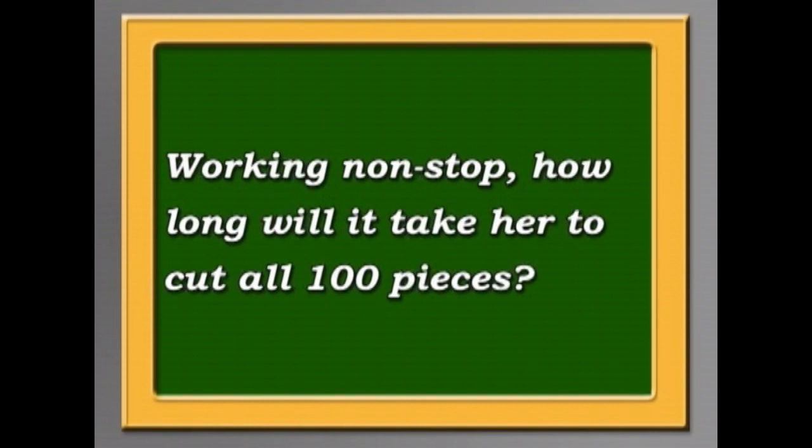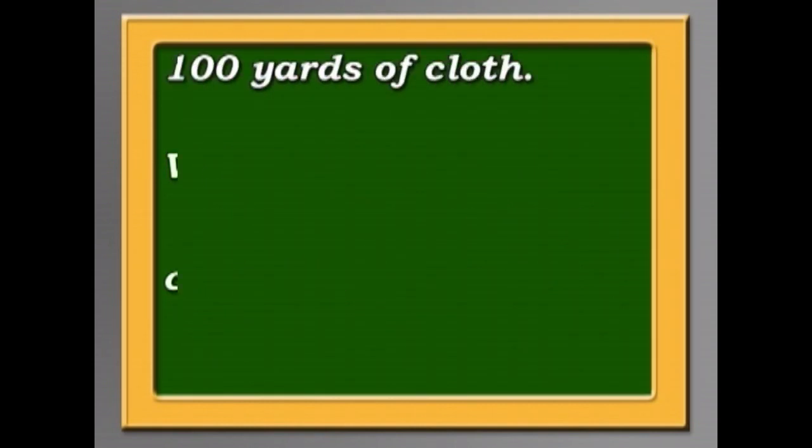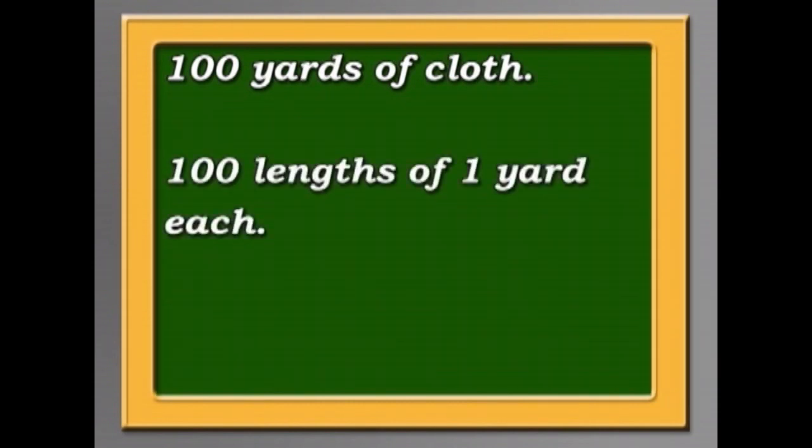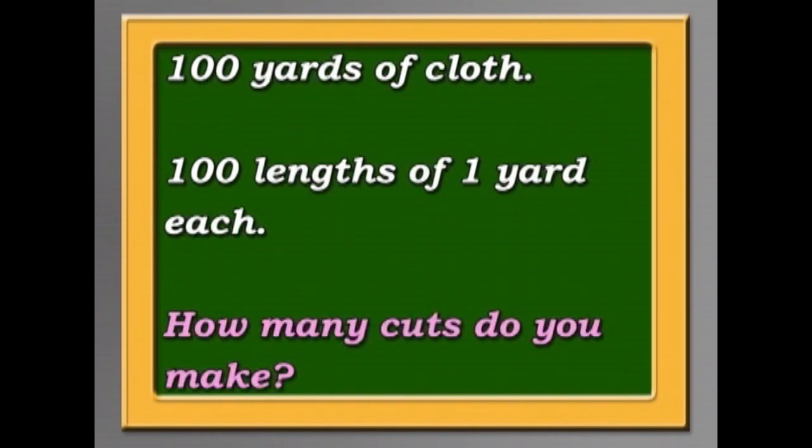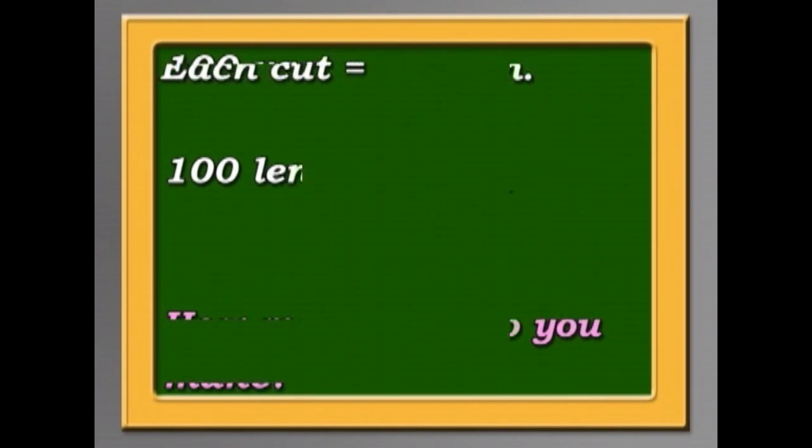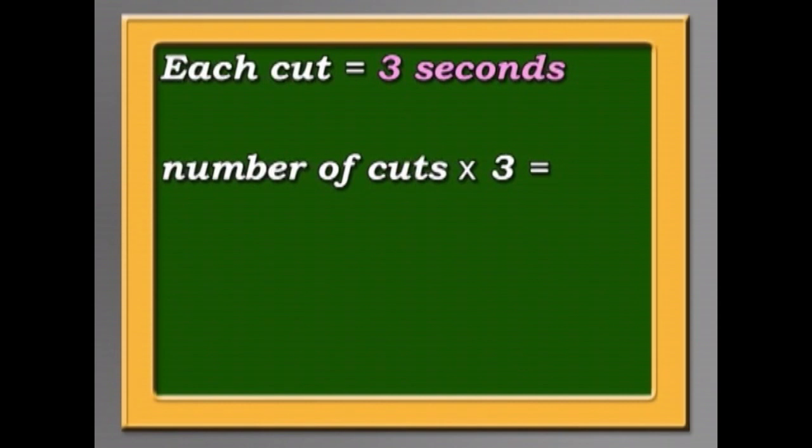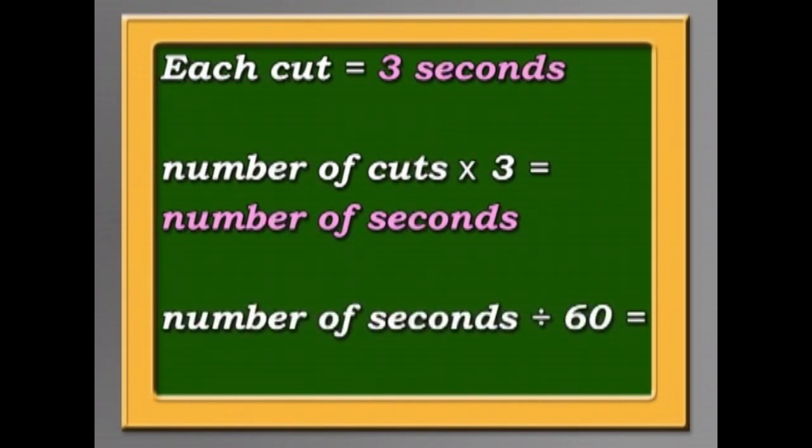If you have 100 yards of cloth and you want to make 100 lengths of 1 yard each, how many cuts do you make? And if each cut is 3 seconds, you multiply that number by 3 to find out how many seconds it takes. Then you divide that by 60 to find out how many minutes it will take. I'll leave it up to you. It's not that difficult.